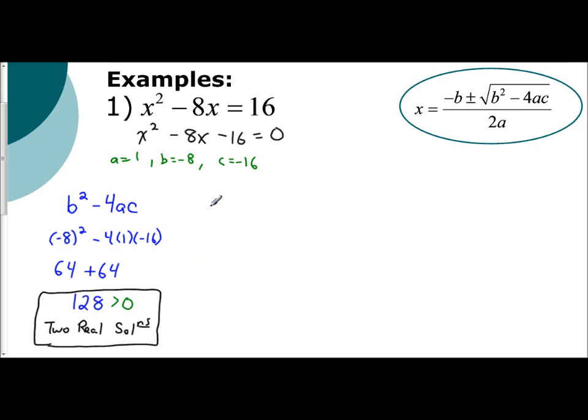Then you go right to the quadratic formula. X equals negative b. Now here's the cool part. Now when you do negative of negative 8, plus or minus the square root. Here's the cool part. Now you don't have to do b squared minus 4ac. You don't have to do negative 8 squared minus 4 times 1 times negative 16. And the reason why is this is your discriminant. And you already found that value.